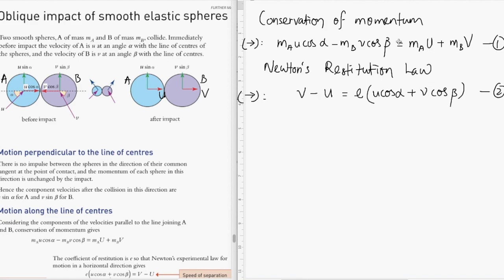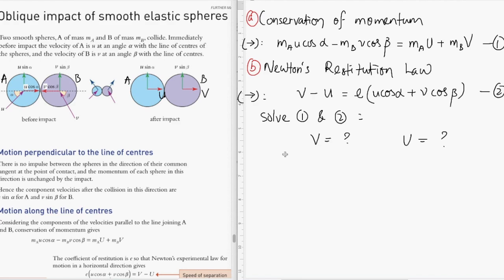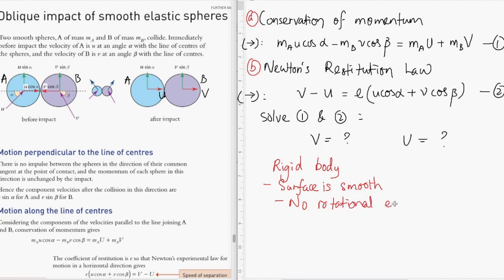From here we have constructed two equations in the unknowns capital V and capital U, the final horizontal velocities. We can solve these simultaneously using any simultaneous equation strategy to obtain V and U. To summarize, these are the two strategies for solving oblique collision problems involving rigid bodies — conservation of momentum and Newton's restitution law — with the key assumption that the surface is smooth, so there is no rotational effect and the vertical components remain unchanged.